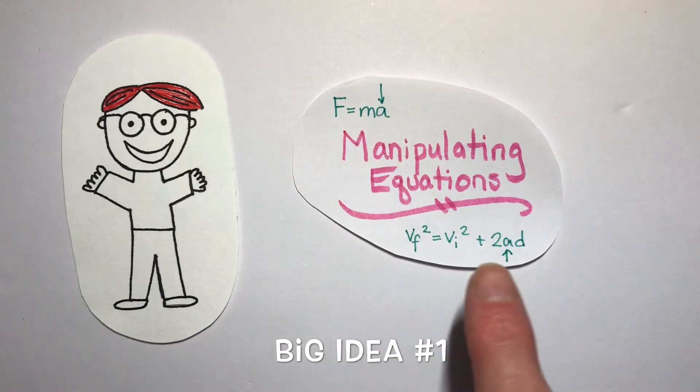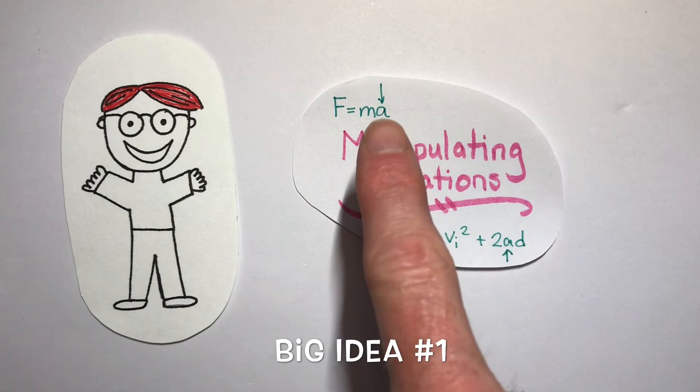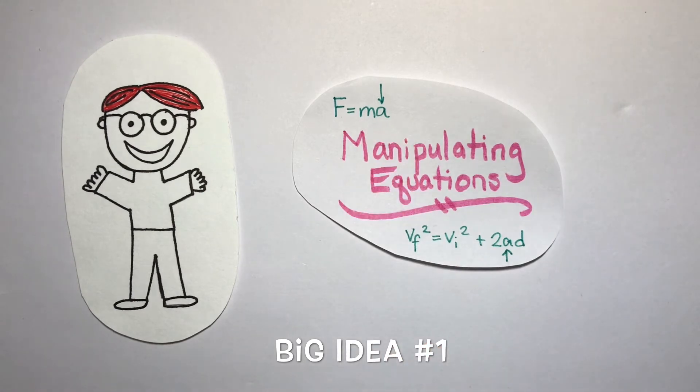Another type would be to consider a second equation, rearrange it to solve for an important concept like acceleration, and then substitute that back into our original equation. Combining two equations together is often necessary in order to be successful when solving problems. So this is big idea number one.